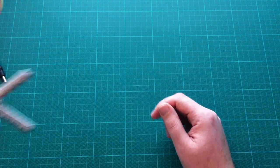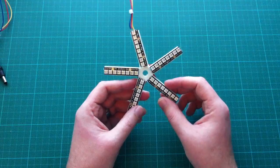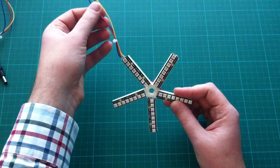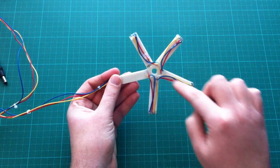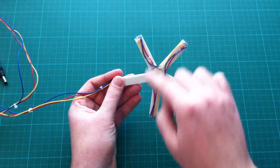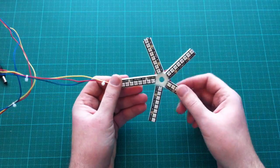The result is this star with five sticks, where we have power, ground and data coming in, and this is then relayed between all the sticks, resulting in one chain of LEDs.